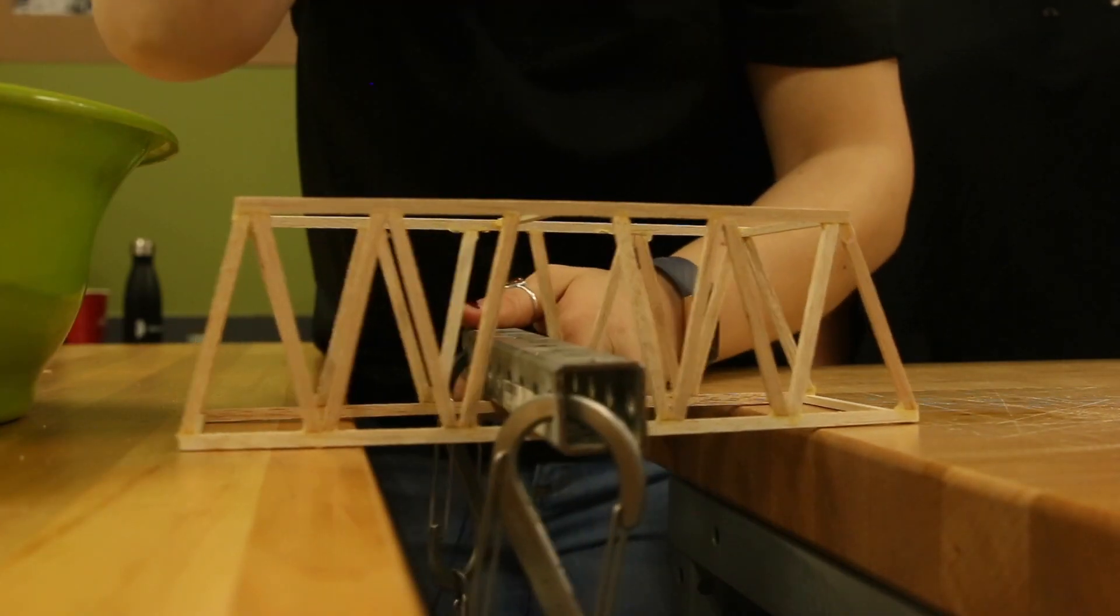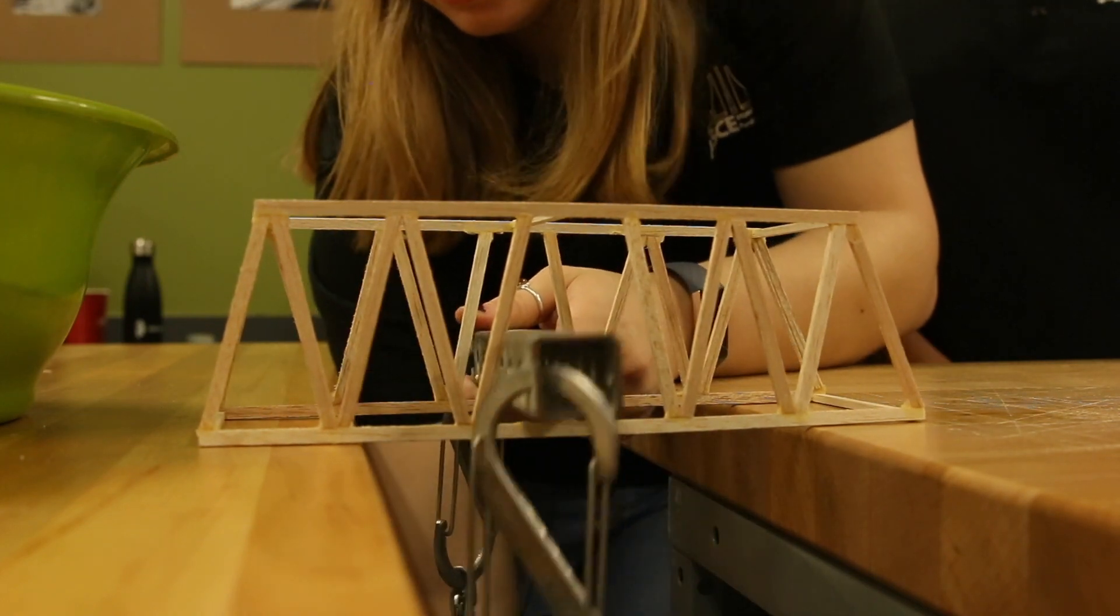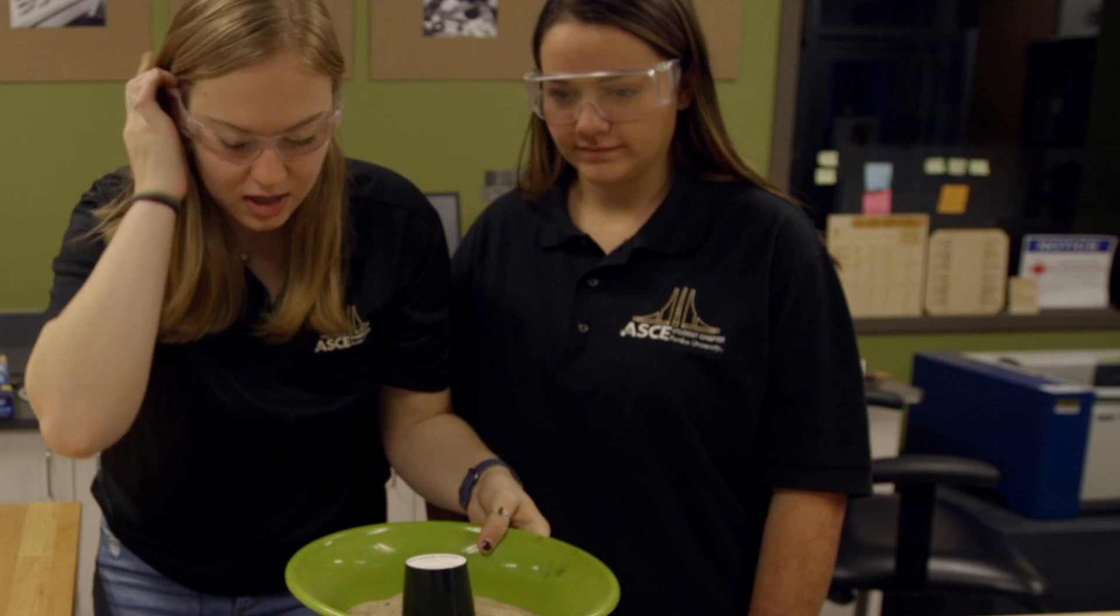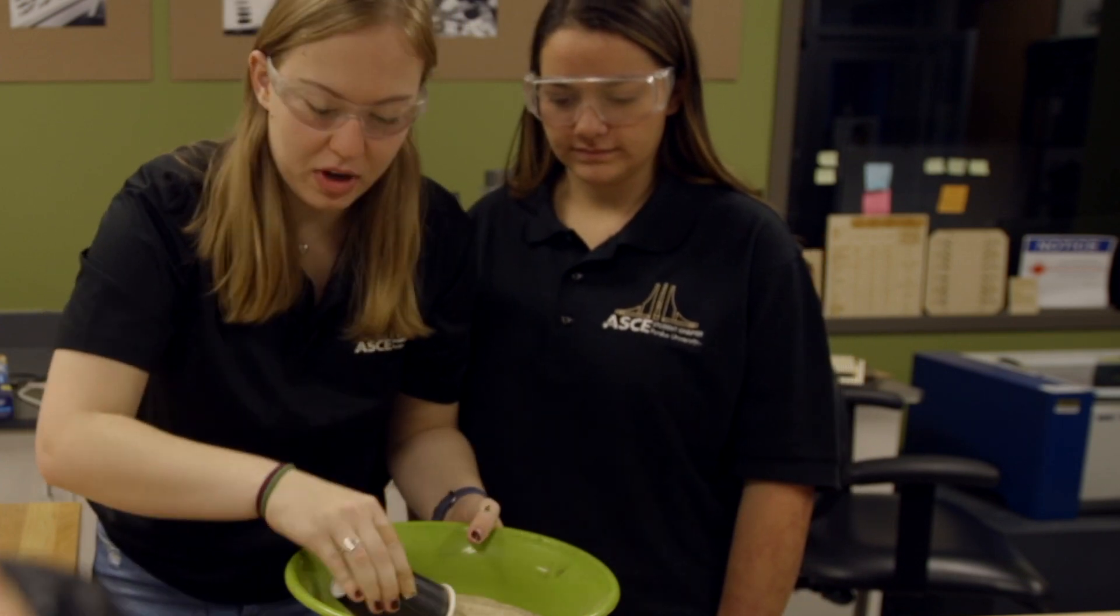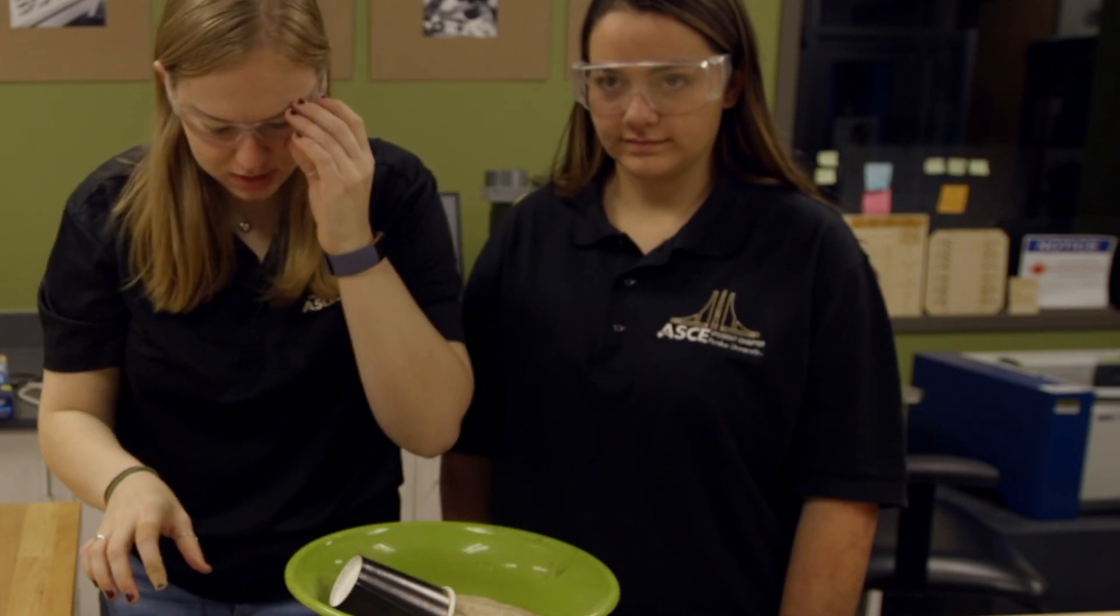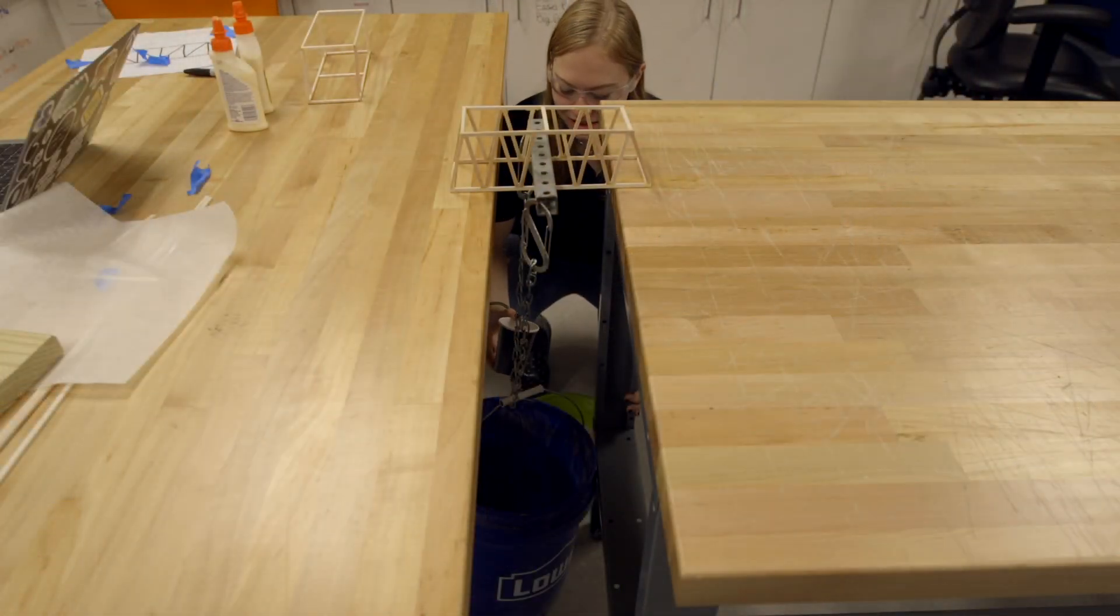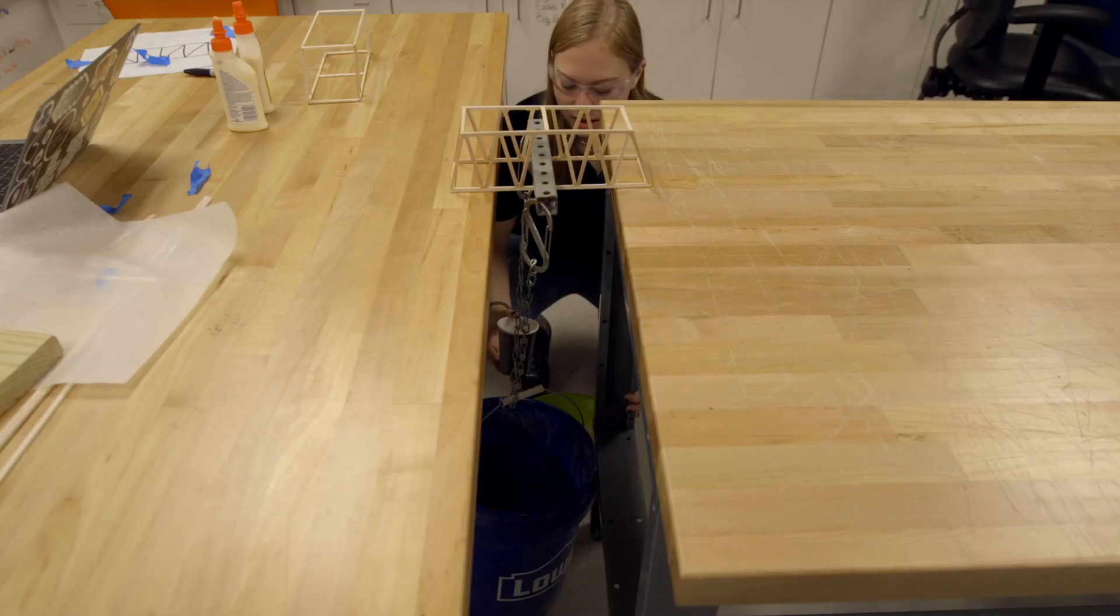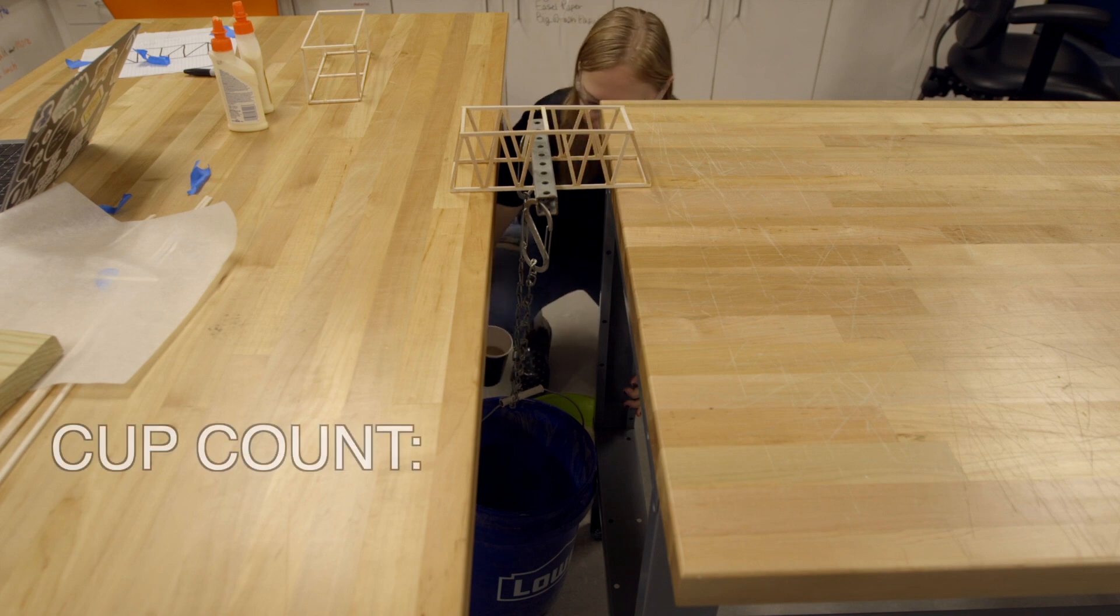We're going to stabilize the bucket here at the end, and then we are going to grab our sand and our cups, and we're going to gradually fill this bucket with sand until this bridge breaks. Now I'm going to load this sand in very slowly. It may break as soon as I load the sand in, but I will jump backwards, and also that's why I'm wearing safety glasses. Now, here we go.